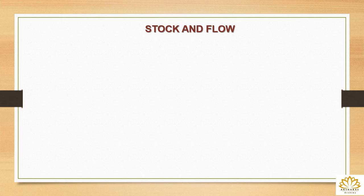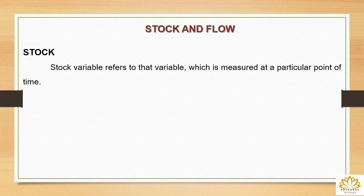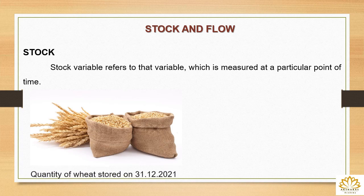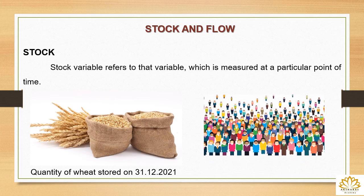Let's now understand the concept of stock and flow. Stock is a variable which is measured at a particular point of time. For example, the quantity of wheat stored on 31st December 2021 — on that particular date, how much wheat was stored. Another example is the population of India as on 31st March 2022 — as on that date, how much population was in India. So when something is measured at a particular point of time, that is called stock.